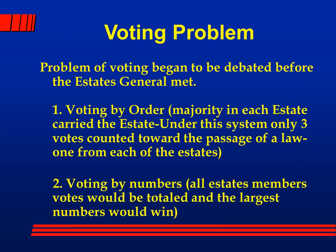The problems of voting were debated. First: voting by order, where the majority of each estate carried that estate — only three votes were counted. Second: voting by numbers, where all estate members voted and the largest total would win. Crucial here is the clergy, because there's high clergy and low clergy, almost split 50-50. It doesn't take many cardinals and bishops switching to throw that vote out of whack. The Estates General is just going to grind to a halt over this voting problem.